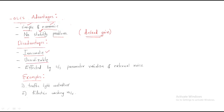The second disadvantage is that it is unrealizable. Third, it is affected by system parameter variation and external noise. If any system has a parameter variation, the open-loop system will be completely disturbed. Similarly, if there is external noise, the open-loop system will also be disturbed.